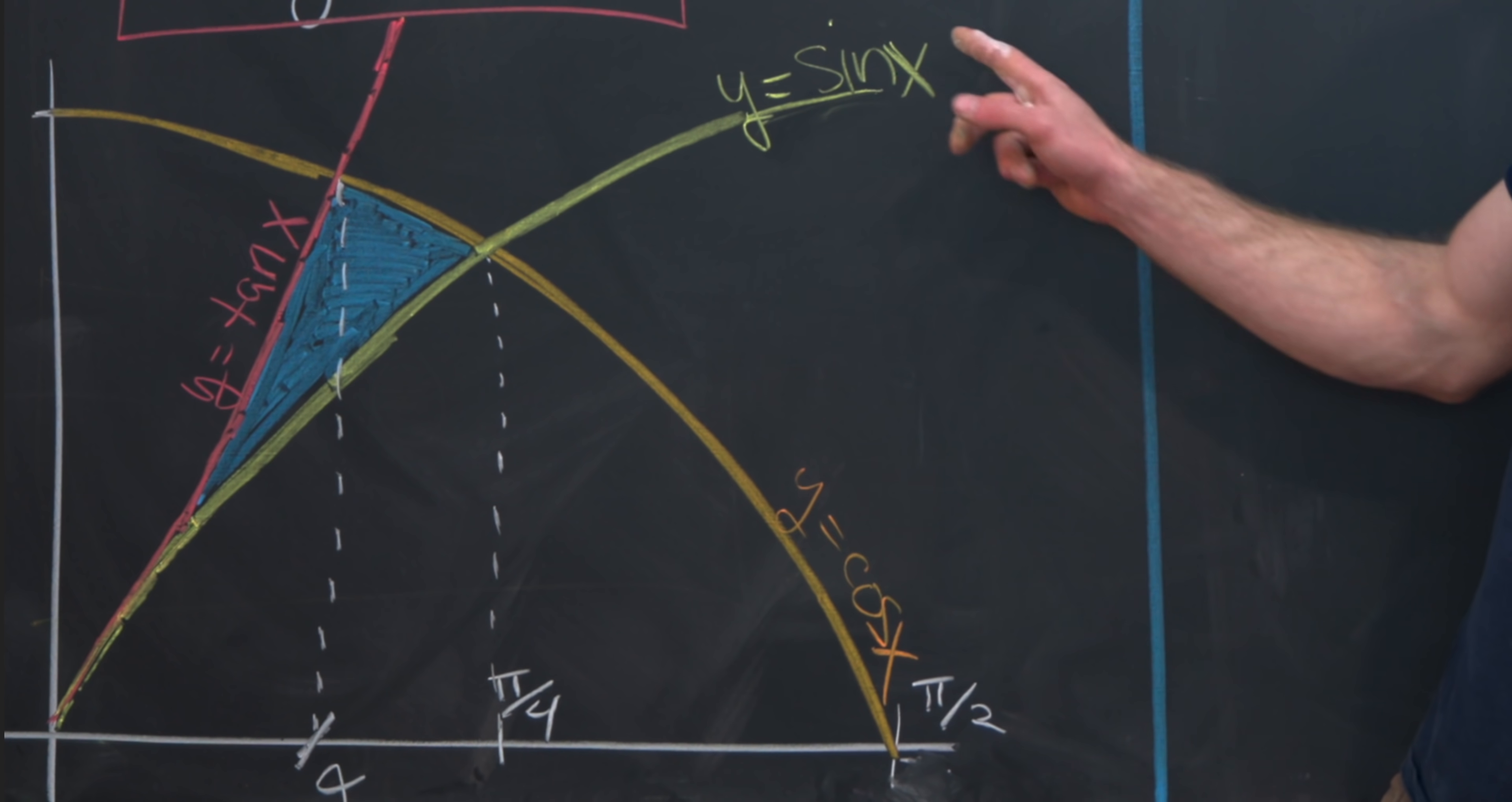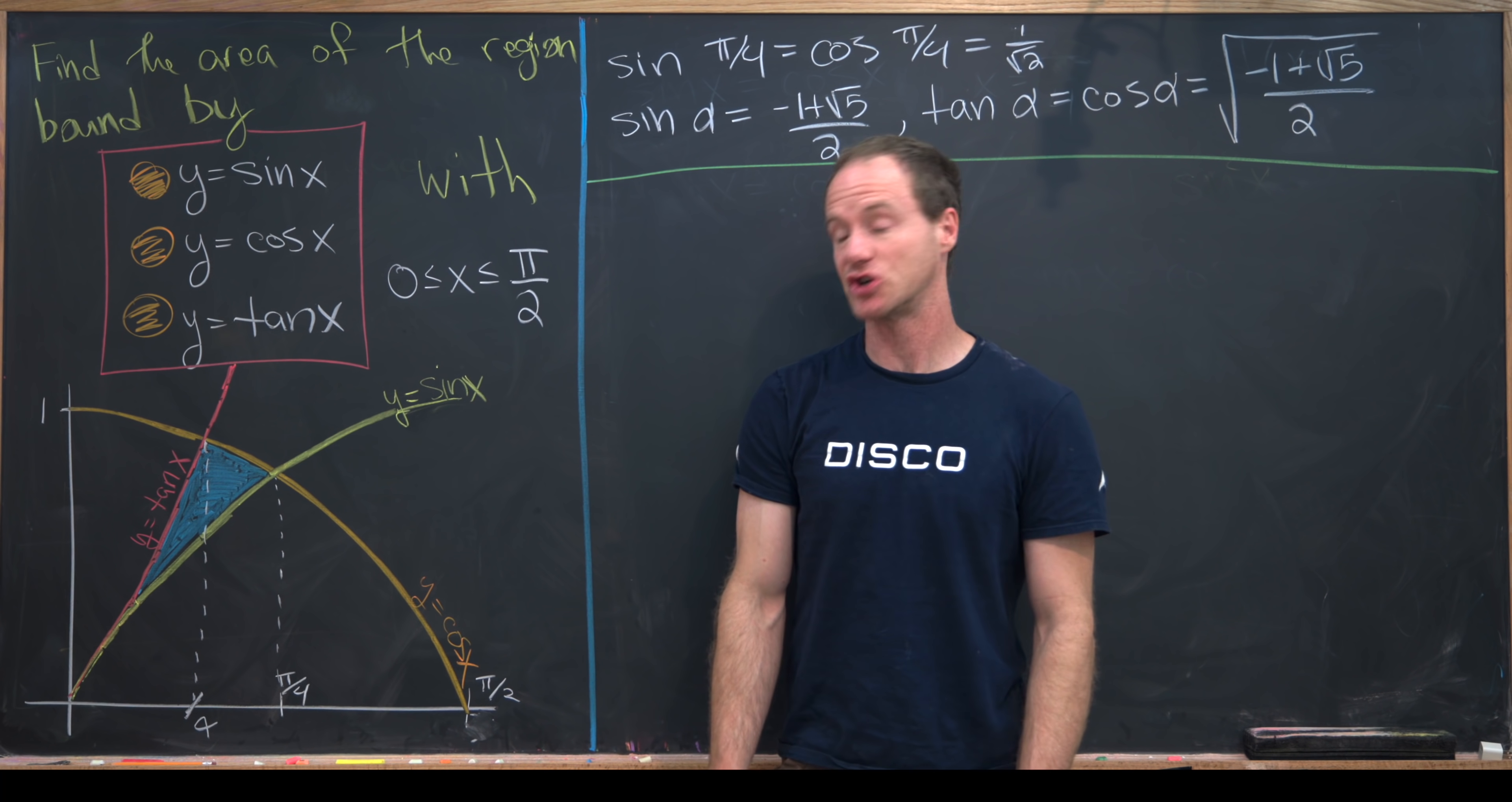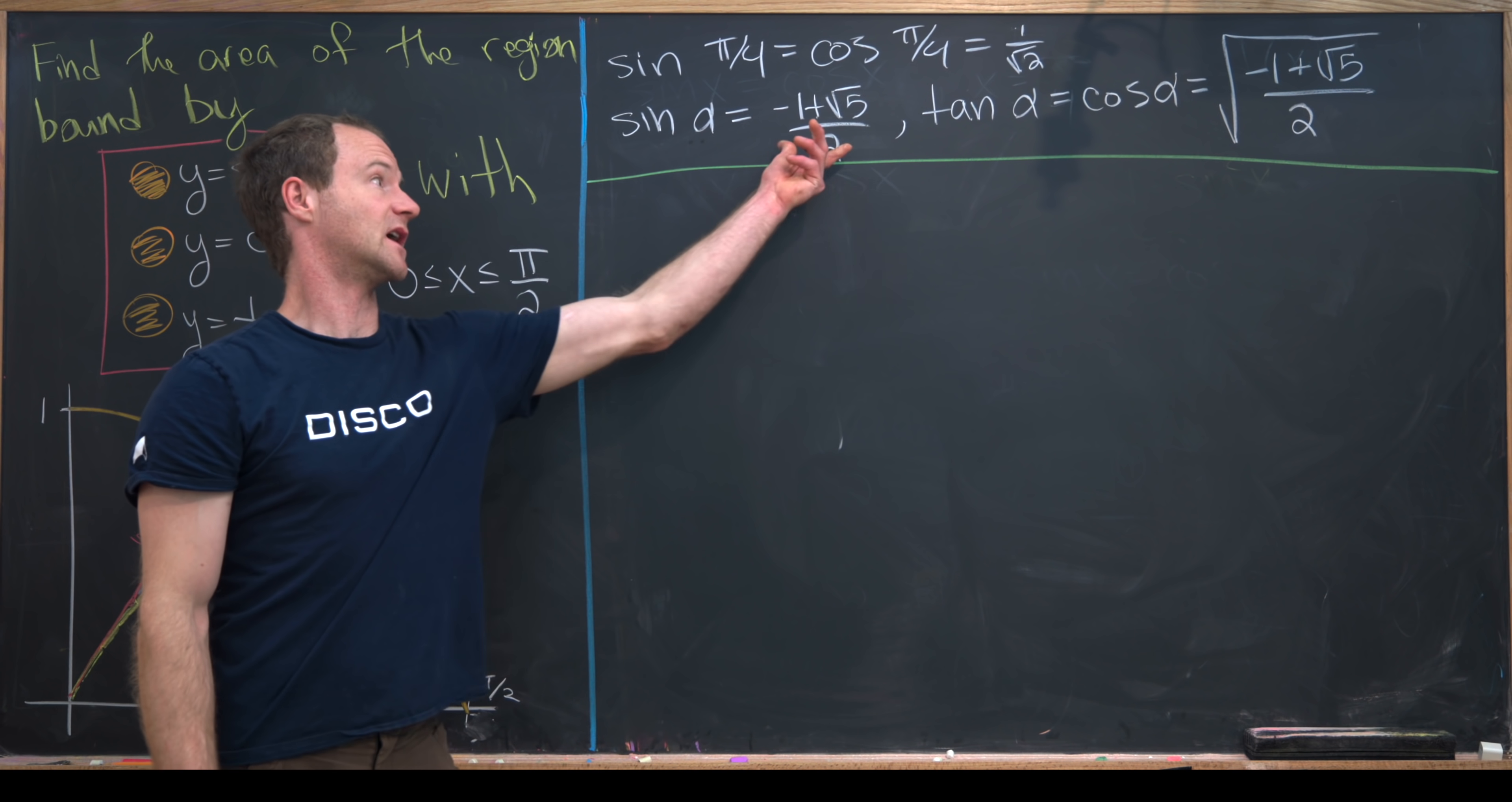Let's recall that sine and cosine crossed at pi over 4, and their value at pi over 4 is equal to 1 over the square root of 2. Furthermore, we determined that tangent and cosine crossed at this value, which we called alpha. Maybe we didn't exactly determine what it was, but we did determine its sine value, and its tangent and cosine value could also be determined using Pythagorean identities. So sine of alpha was minus 1 plus root 5 over 2, and tangent and cosine were the square root of this object.